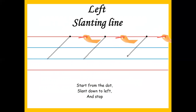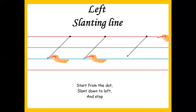This is left slanting line. Start from the dot, slant leftwards, come down and stop. Again in the same way — start from top, come down in a left slant way and stop. Again same: start from top, in a left slanting way, come down and stop. This is left slanting line.